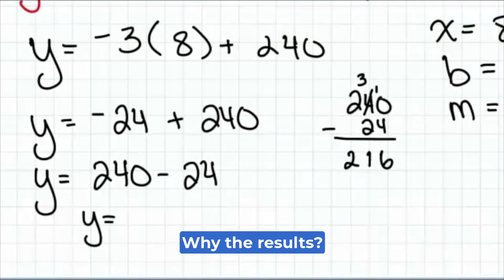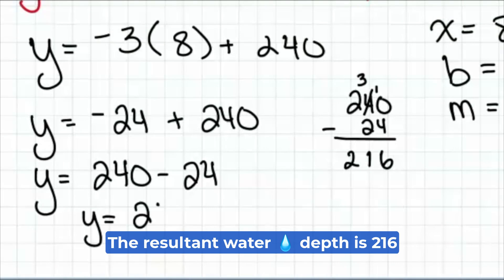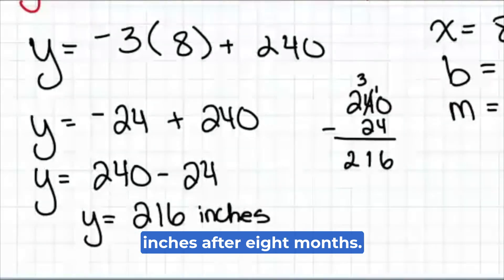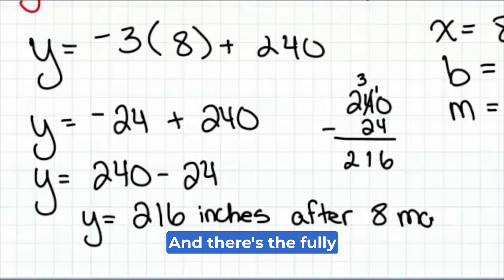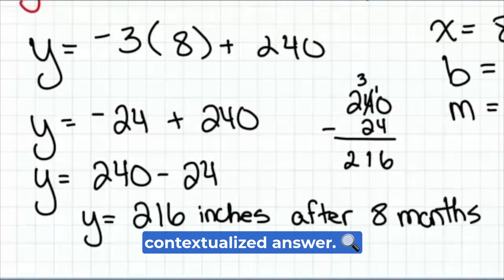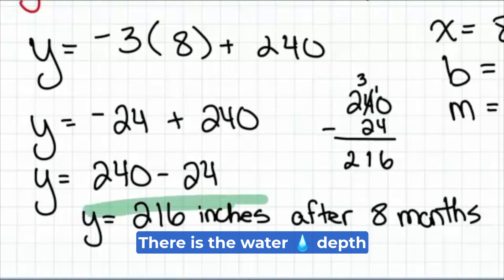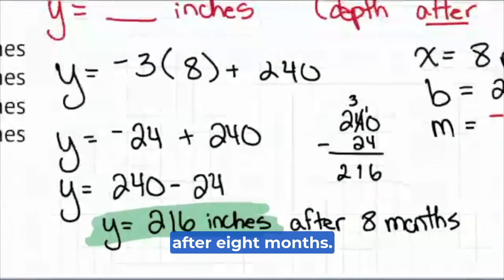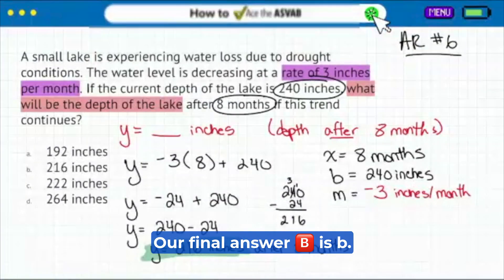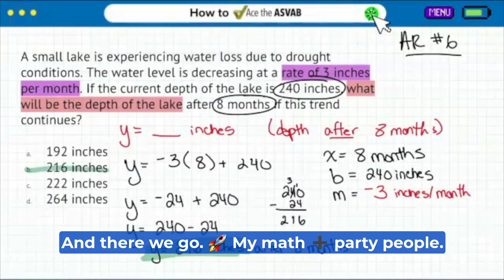And there we go. So y, the result, the results in water depth is 216 inches after eight months. And there's the fully contextualized answer. But there we go. There is the water depth after eight months. Our final answer is B.